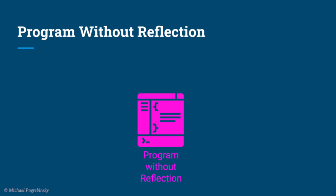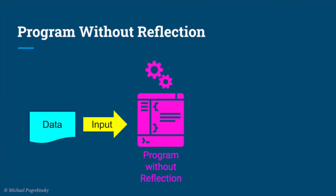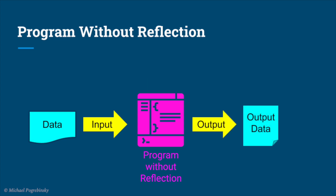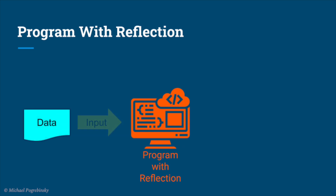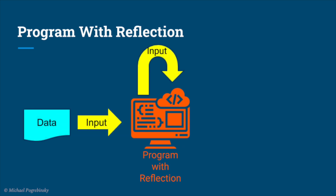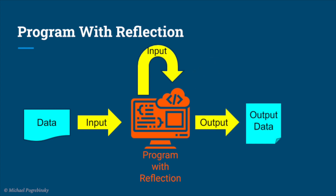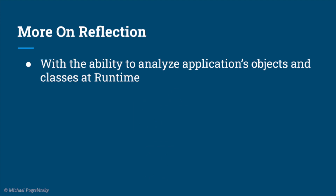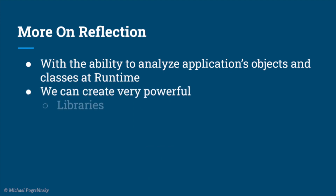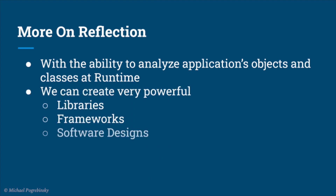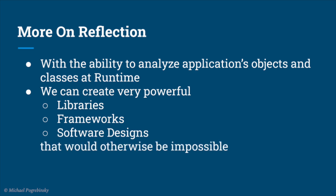The regular code we usually write and execute as a program takes data as input, analyzes that data, performs some operations on it, and gives us an output. To put that in contrast, a program we write with Reflection treats both data and the application's code as inputs, analyzes and performs operations on both, and produces an output. With that ability to analyze our application's objects and classes at runtime, we can create very powerful libraries, frameworks, and software designs that would otherwise be impossible to create.